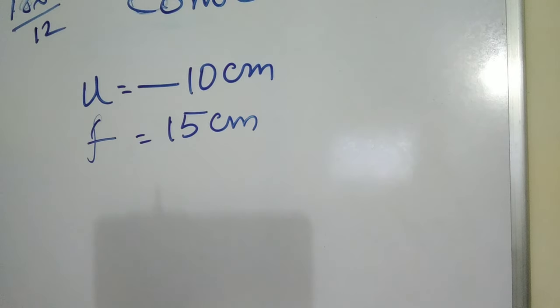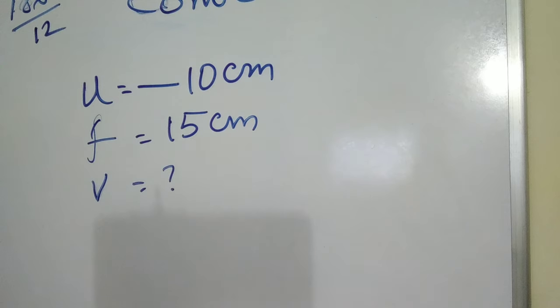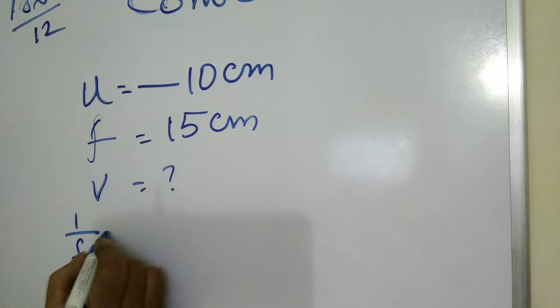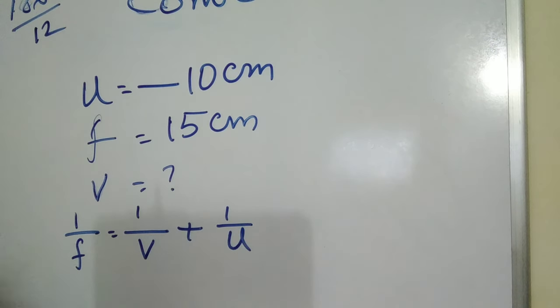In order to find the position of the image, we need to find v. For finding v, we have to apply the mirror formula. What is mirror formula? 1 by f equals 1 by v plus 1 by u. v is unknown here, so we can substitute for f and u and find out the value. Let us write here.